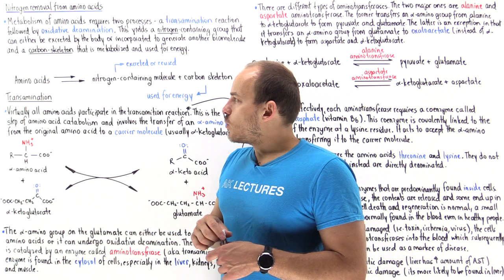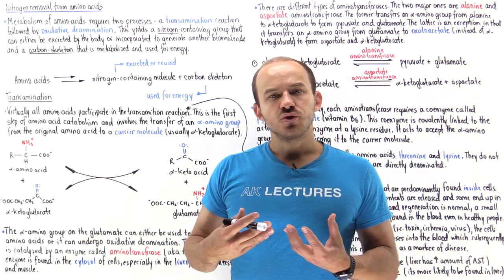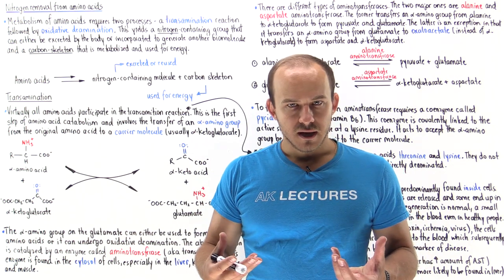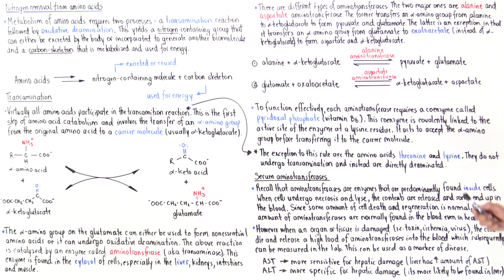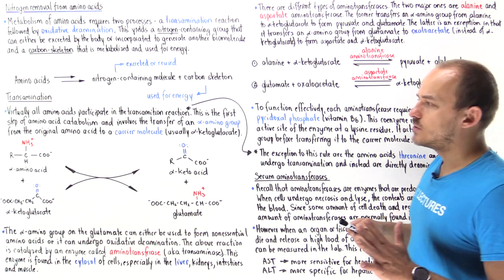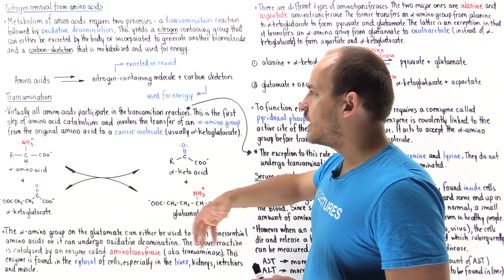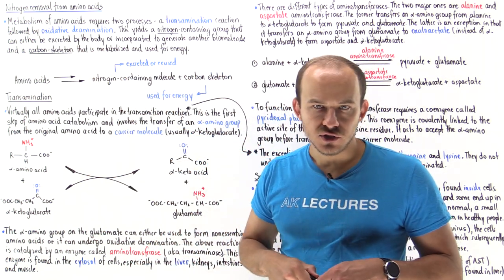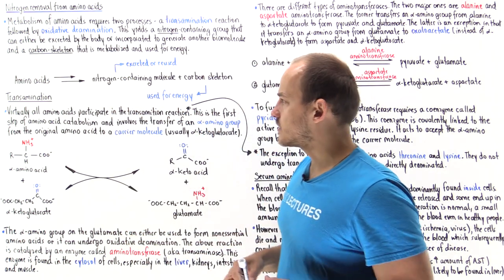In this lecture, I want to focus on the transamination step. Virtually all amino acids undergo the transamination step, and the exception to this rule are the amino acids threonine and lysine. Threonine and lysine do not undergo this transamination reaction; instead, they directly undergo the oxidative deamination reaction, which we'll talk about in the next lecture.